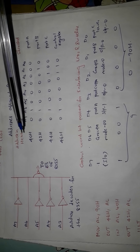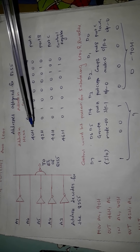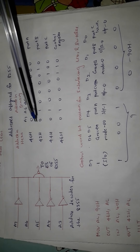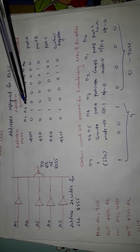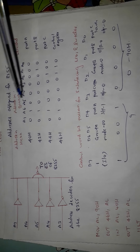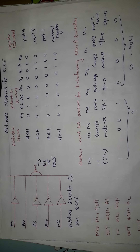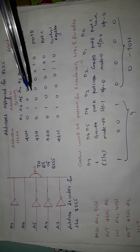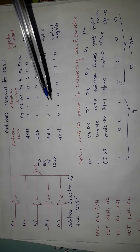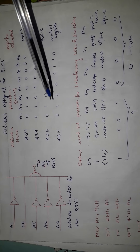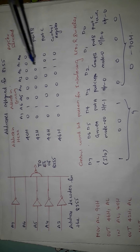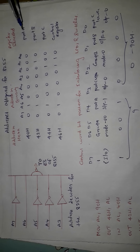We are using only even addresses here. For example, we have taken four different addresses: 40h, 42h, 44h, and 46h — and these are all even addresses in hexadecimal. They are also represented in binary here. 40h in binary is 0100 0000, 42h is 0100 0010, 44h is 0100 0100, and 46h is 0100 0110. These four even addresses are used to select Port A, Port B, Port C, and the control register respectively.